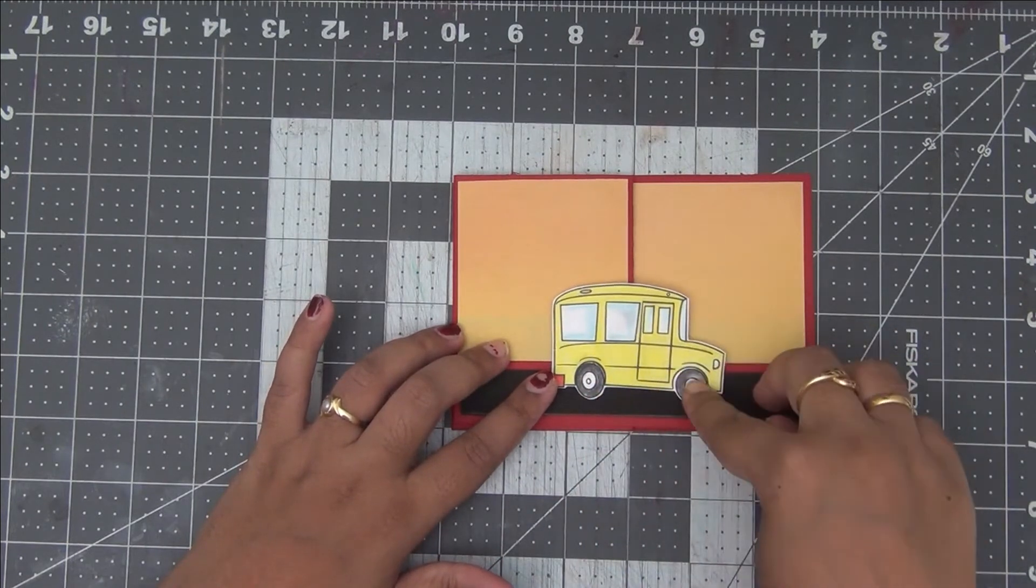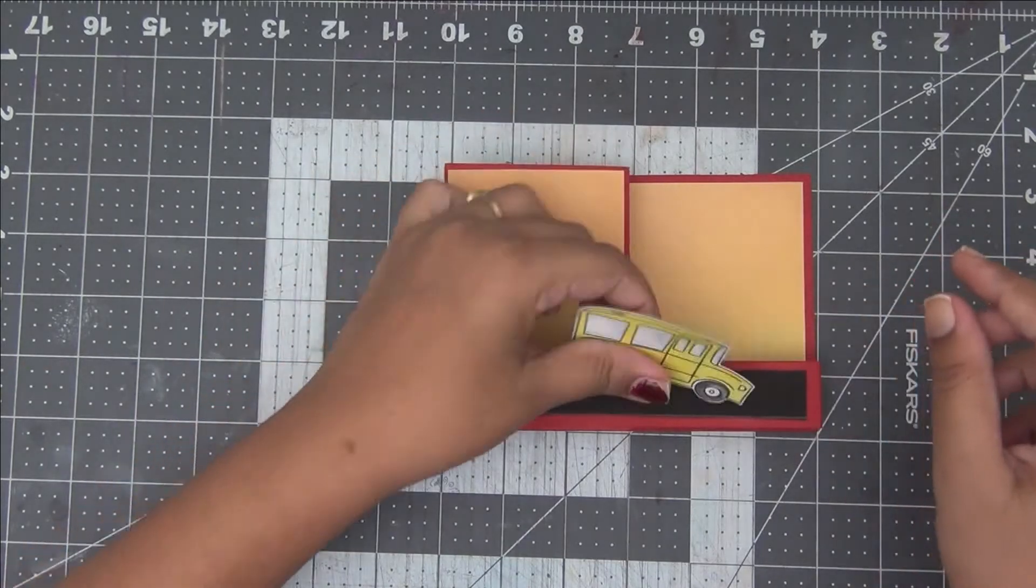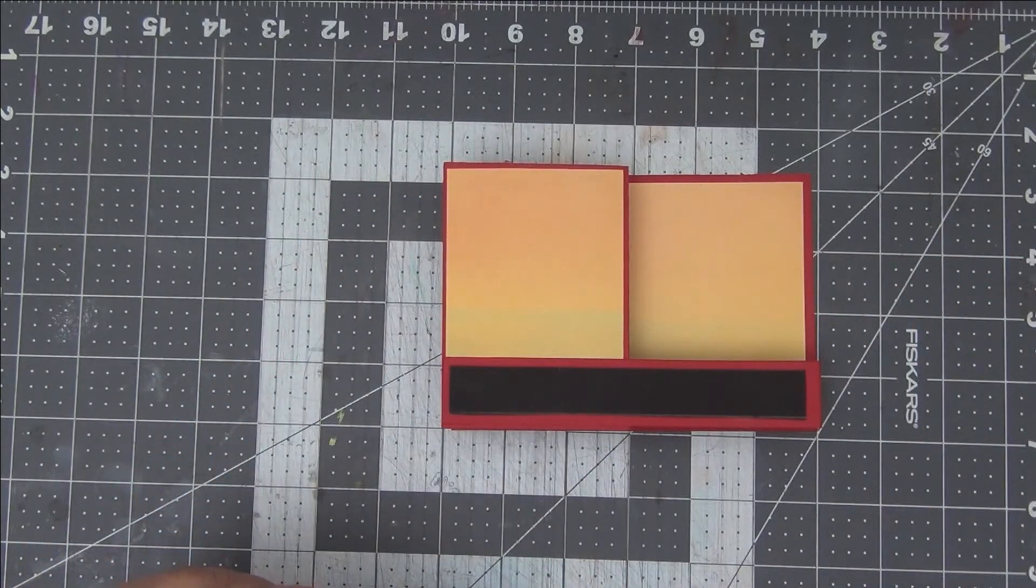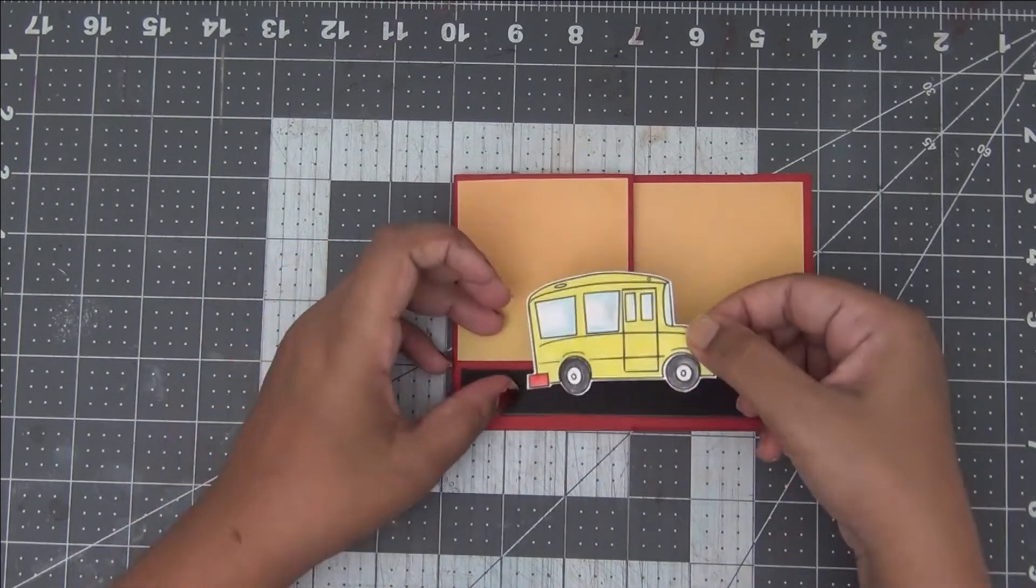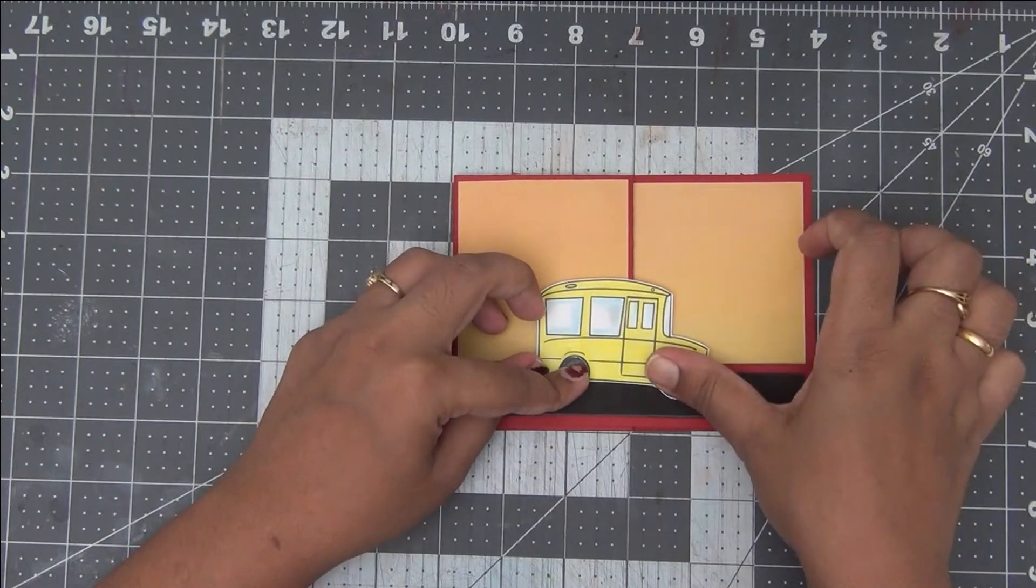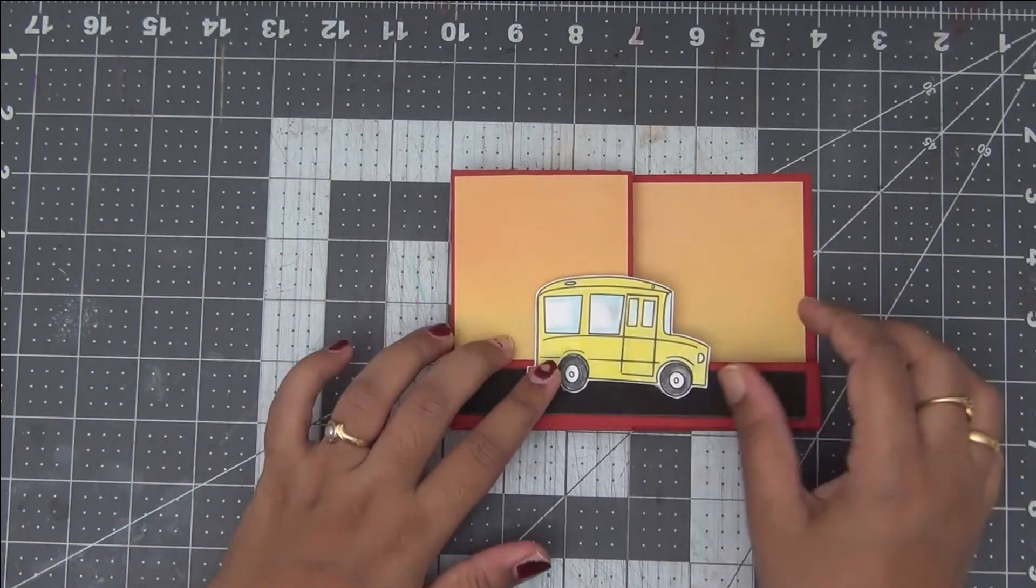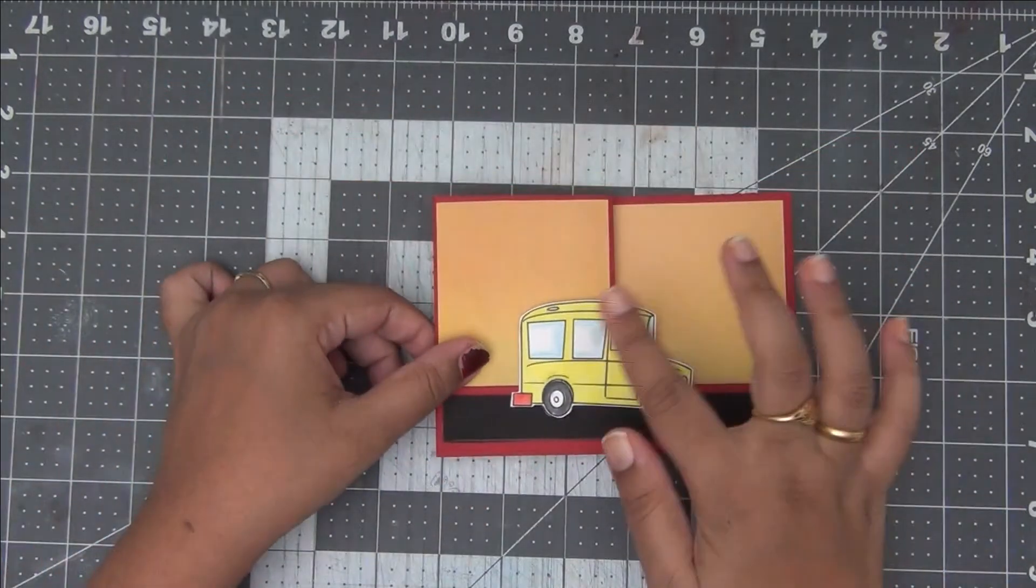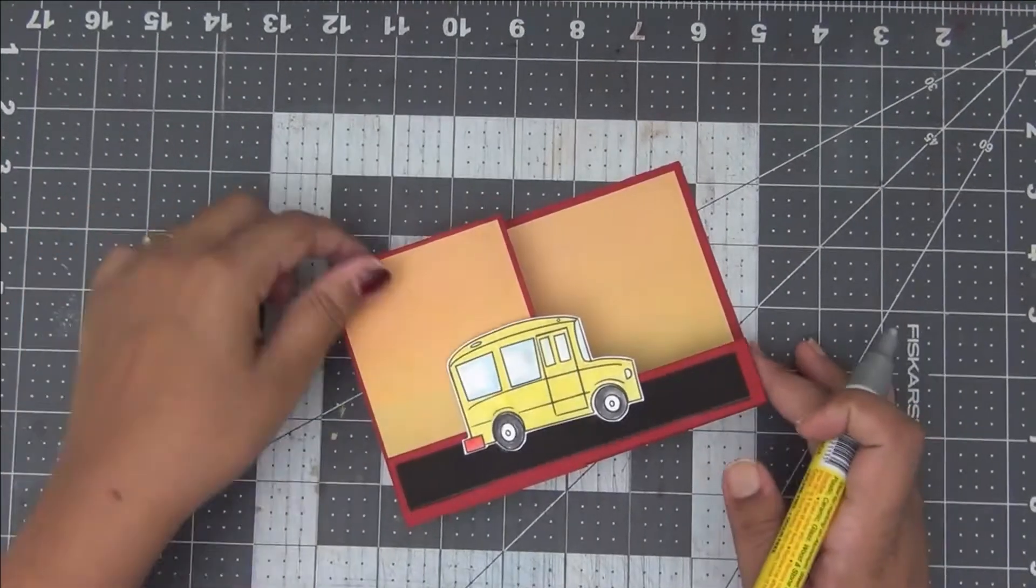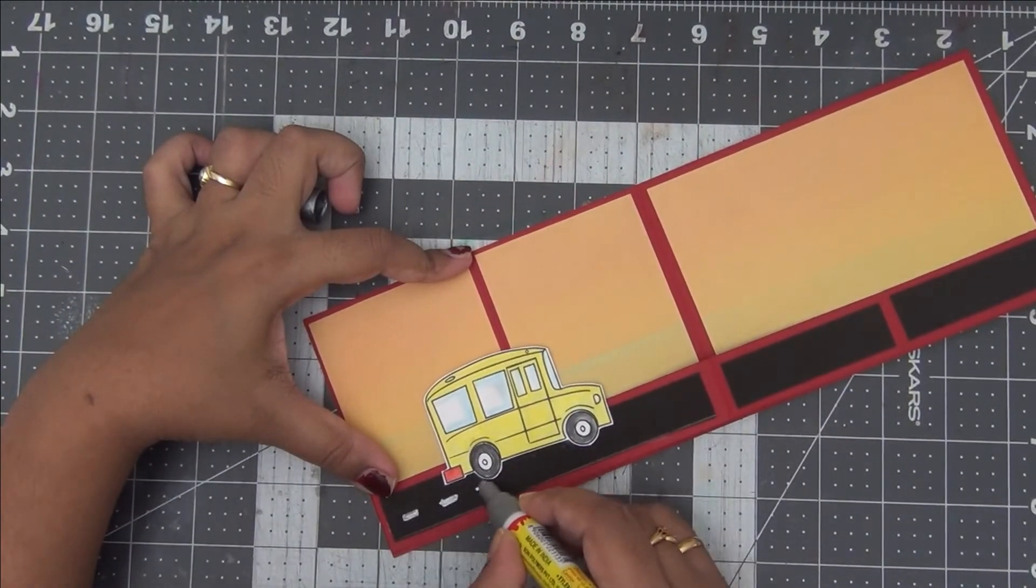As you can see here, I've printed this school van image onto white cardstock, colored it with watercolor pencils, and I have fussy cut it. I wanted to do a teacher's day card for my daughter's teachers since teacher's day is coming. So I thought this school van image will go very well with the teacher's day card. I've adhered my school van onto the black strip here.